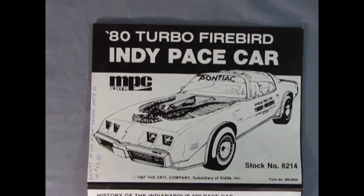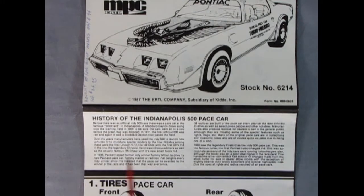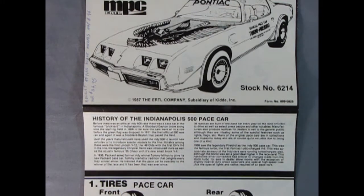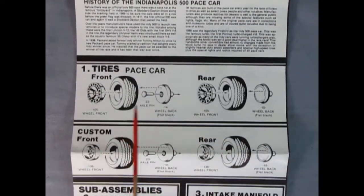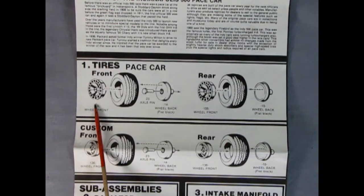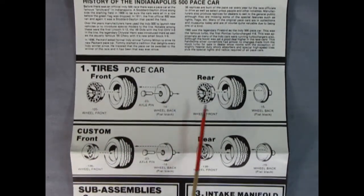So now we're going to look at these really righteous instructions here of our 80 Turbo Firebird Indy Pace car. Now this kit came out in 1986, but it is of course of an 80. We do get a bit of history of the Indianapolis 500 pace car in here, which is really cool. And we can see the tires on here. So you've got the original stock wheels, the tire, the backing plate, and the axle pin.